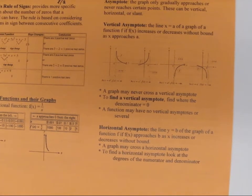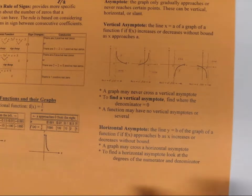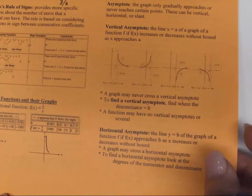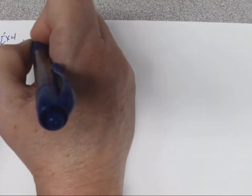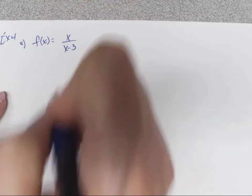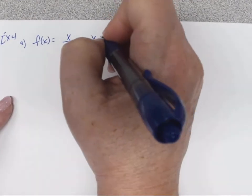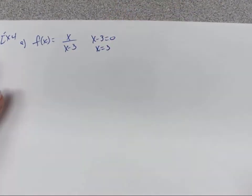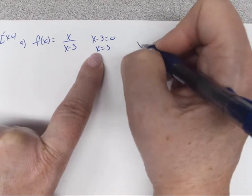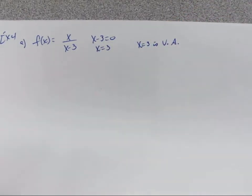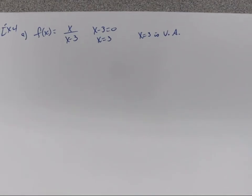A function can have no vertical asymptotes, one, or several. Let's look at Example 4. For f(x) = x/(x-3), we set x-3 = 0 and get x = 3. So x = 3 is the vertical asymptote (VA). Remember, it's a line, not a point.